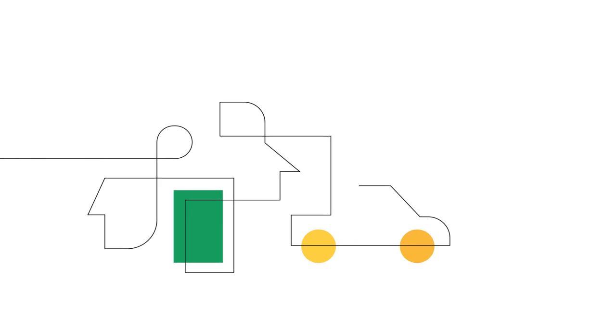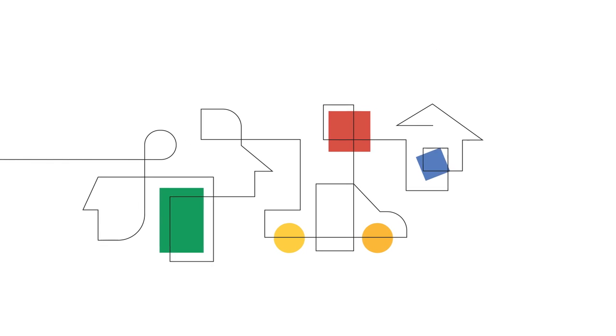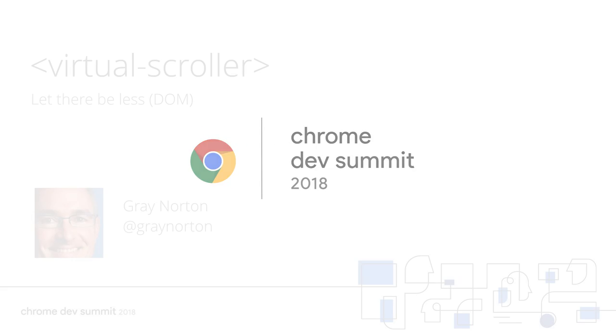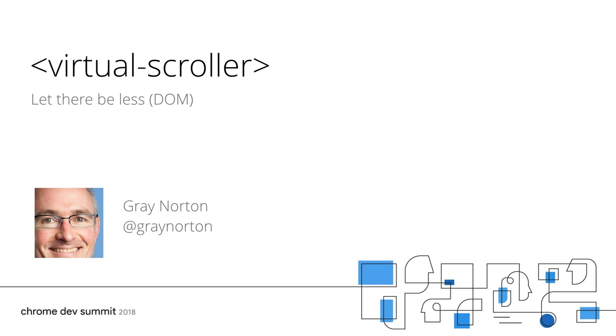Good morning, everyone, and welcome back from the break. My name is Gray. I don't think my parents could have known when they named me all those years ago that my hair would prematurely match my name, or that I would be a valid CSS color. I'm the engineering manager for the Polymer project at Chrome, and my team focuses mainly on web components and libraries and tools to help you use them.